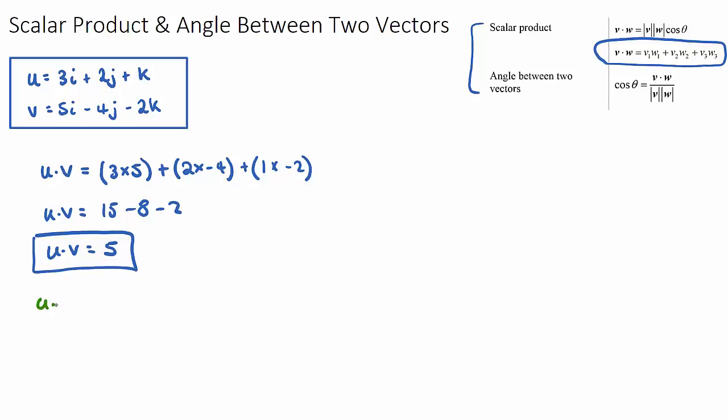This does tell us some information about our two vectors. It means that the angle between our two vectors u and v, if it's greater than zero, it means that they are acute. The angle is acute between the two vectors, and acute means it's between zero and 90 degrees. So this means that the angle between them will be between zero and 90 degrees, which is acute.